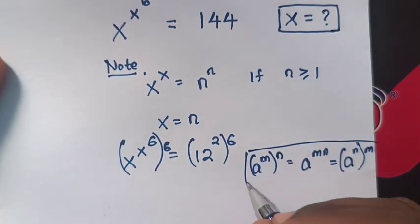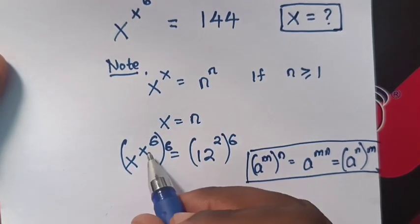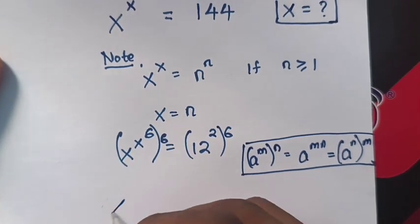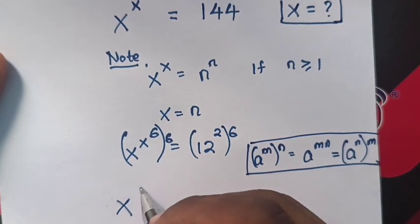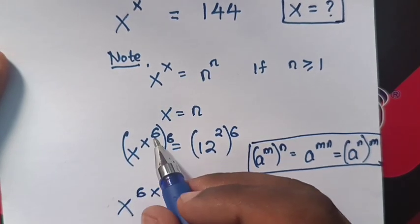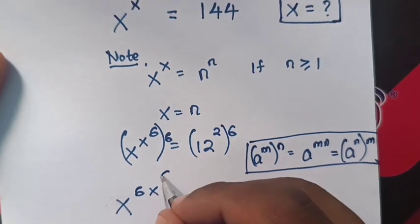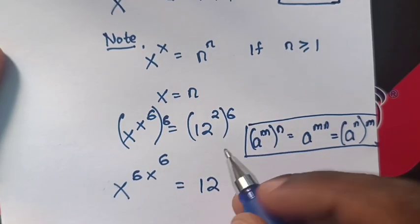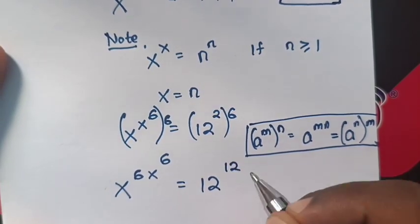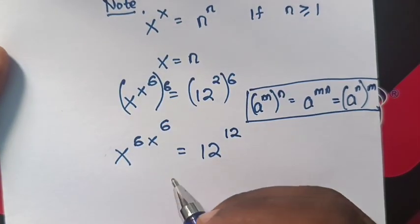So in our equation, when we multiply the powers, it will be x times 6 is 6x power of 6 equals 12. This times this is 12, so 12 power 12 which is n power n.